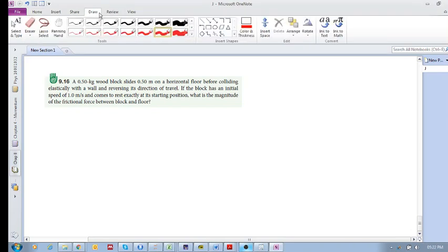Alright, let's look at checkpoint 916. A half kilogram wood block slides half a meter on a horizontal floor before colliding elastically with a wall and reversing its direction of travel. If the block has an initial speed of one meter per second and comes to rest exactly at its starting position, what is the magnitude of the frictional force between the block and the floor?